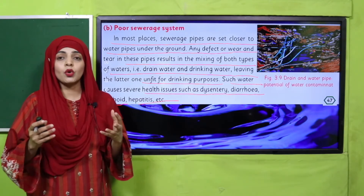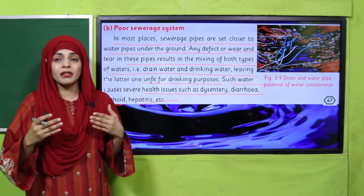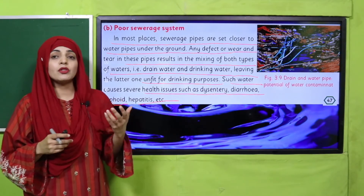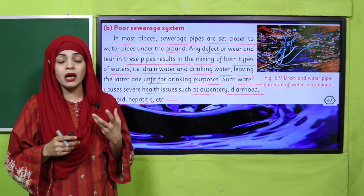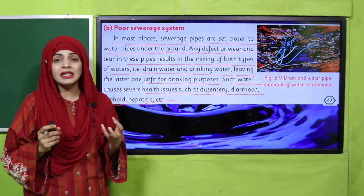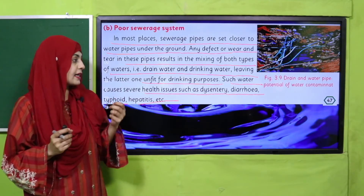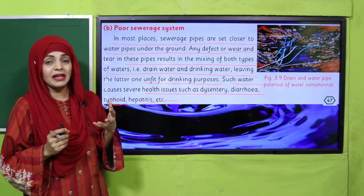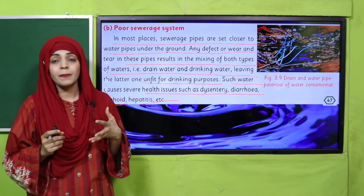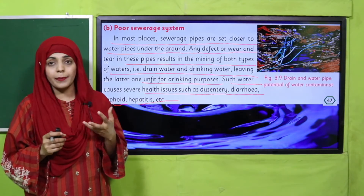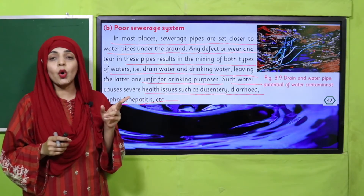Both the sewerage and drinking water pipes are underground, and if they mix, the drinking water becomes hazardous and harmful. There are many diseases caused by this, such as diarrhea, dysentery, and hepatitis, which are very dangerous for us. This is one major way that water becomes polluted.